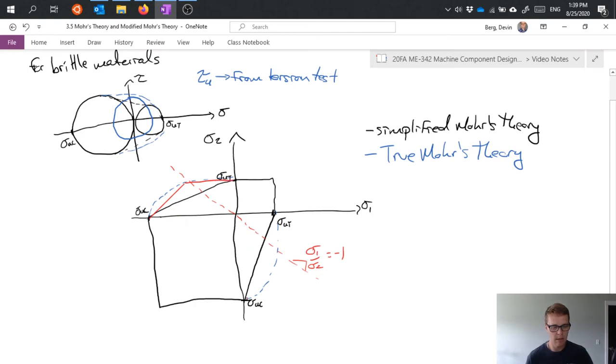and we get this kind of red shape, well okay black here red in the quadrants two and four and black on this side, and that shape is what we call the modified Mohr's theory which would be what would be more commonly used